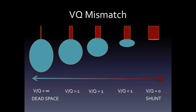VQ mismatching occurs even in the normal lung. In the middle is a normal alveolus in blue with normal perfusion in red. There are areas where perfusion might outweigh ventilation — the extreme of this is considered a shunt. There are areas where ventilation might far exceed perfusion — the extreme of this is considered dead space. This VQ mismatching occurs as part of a spectrum, with VQ ratios anywhere from infinity to zero all along the lung.